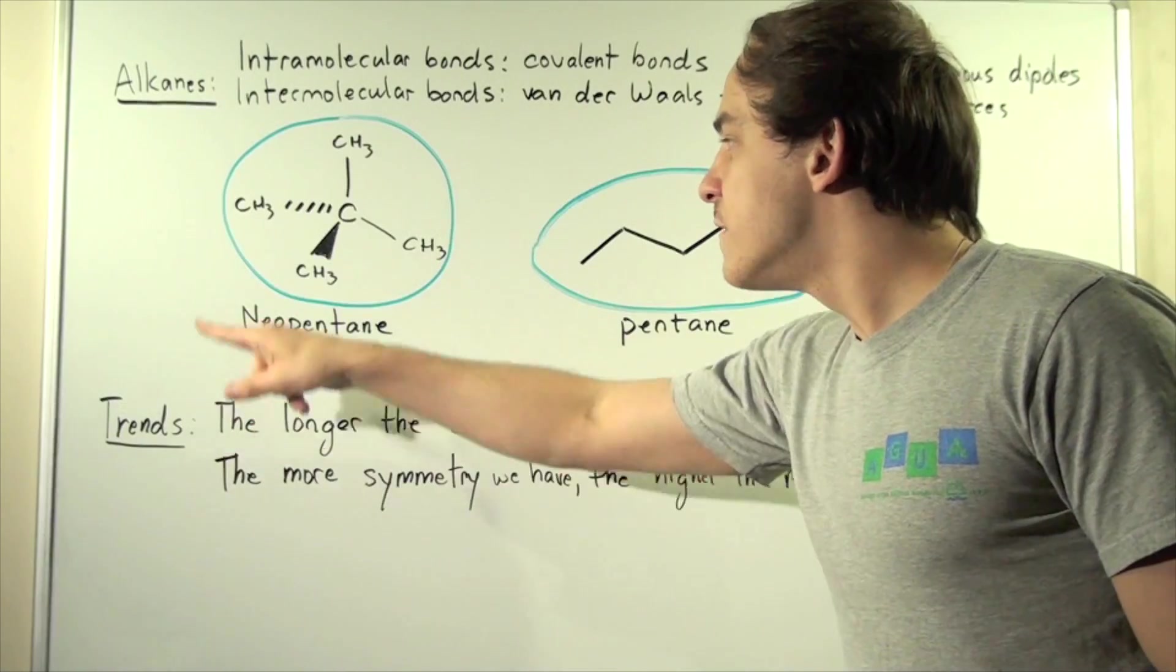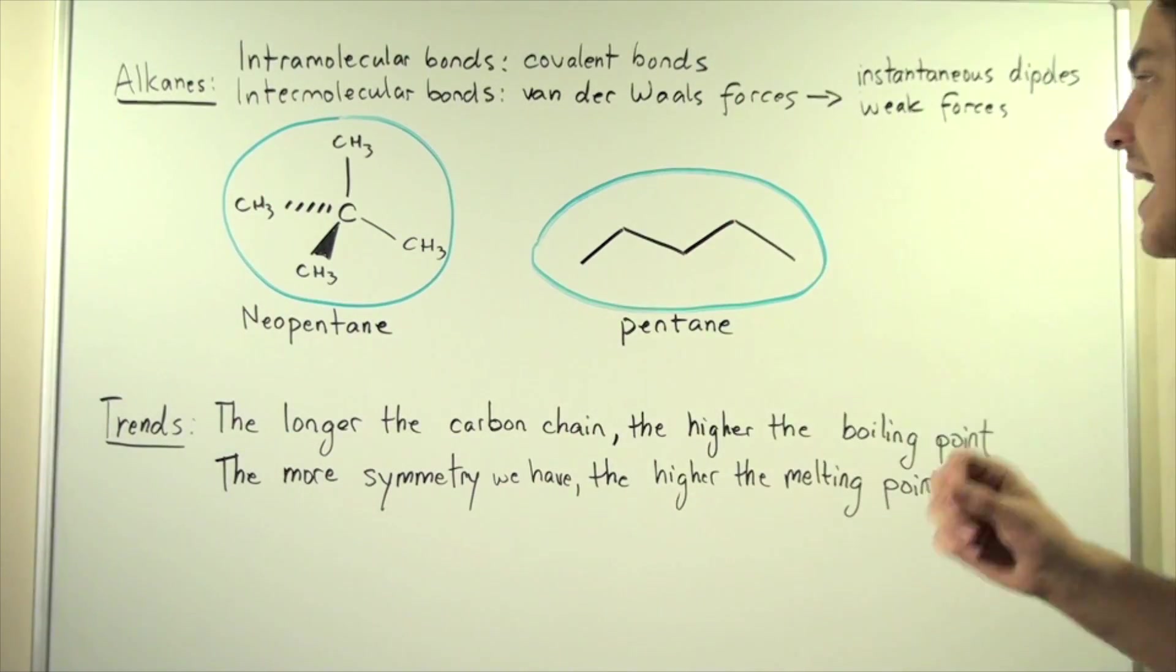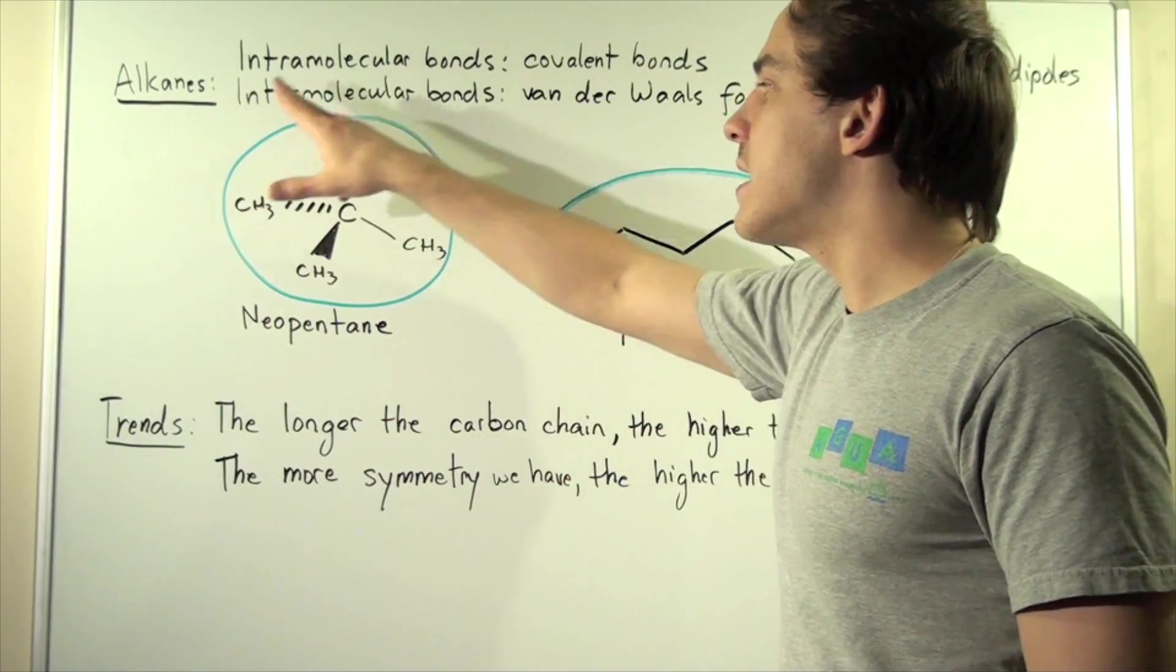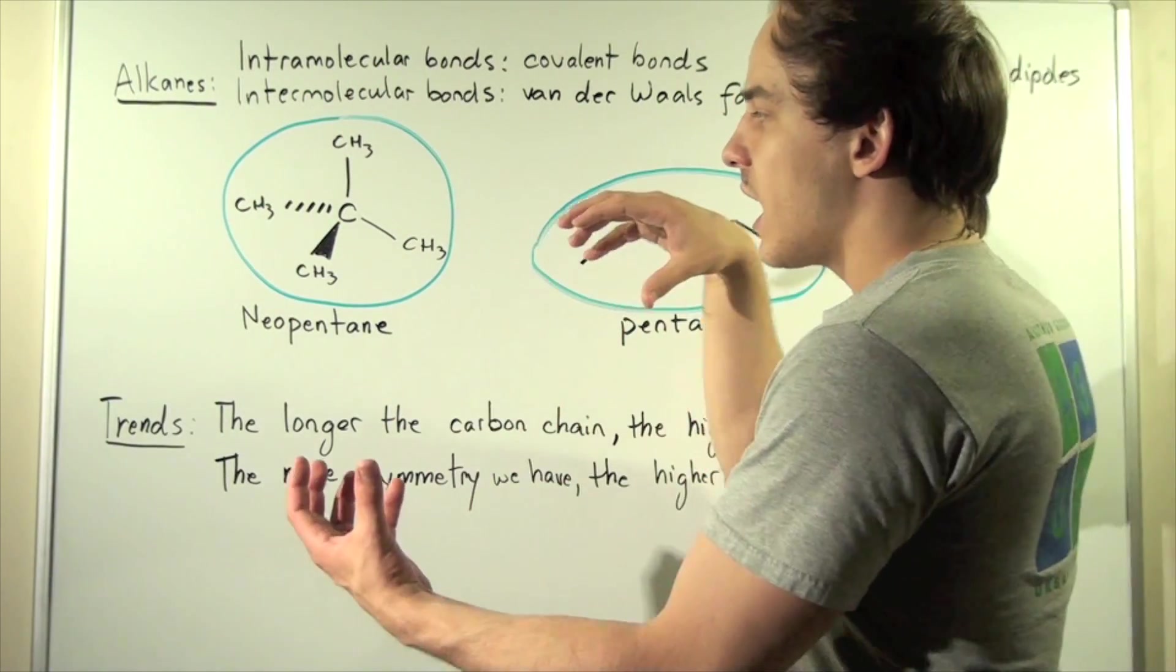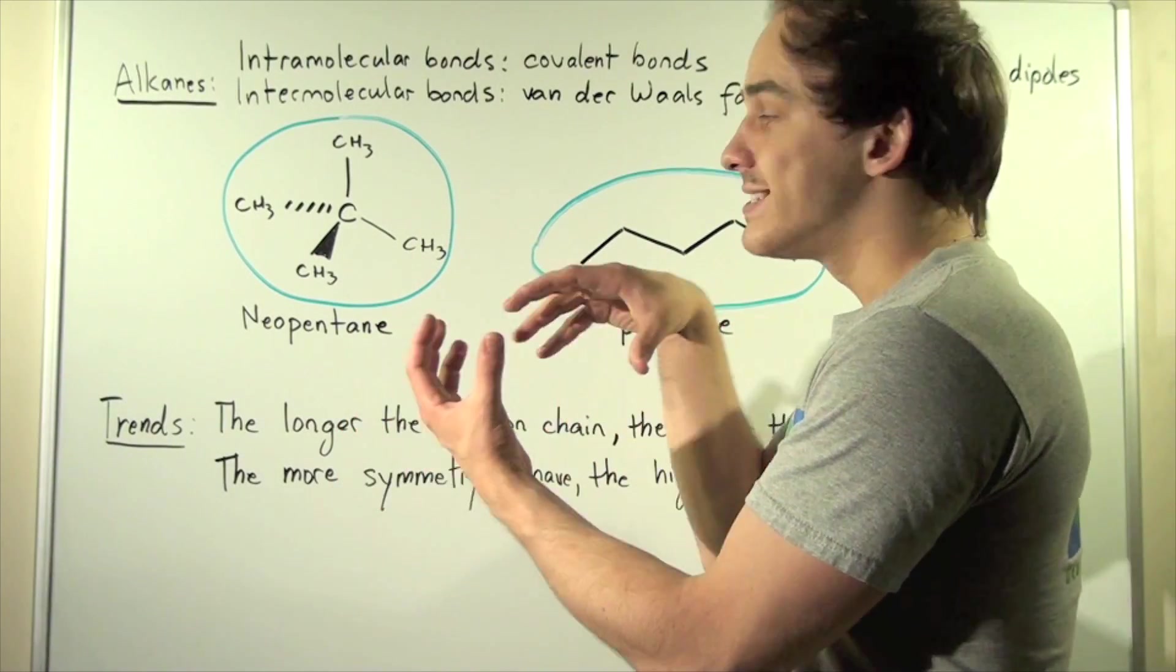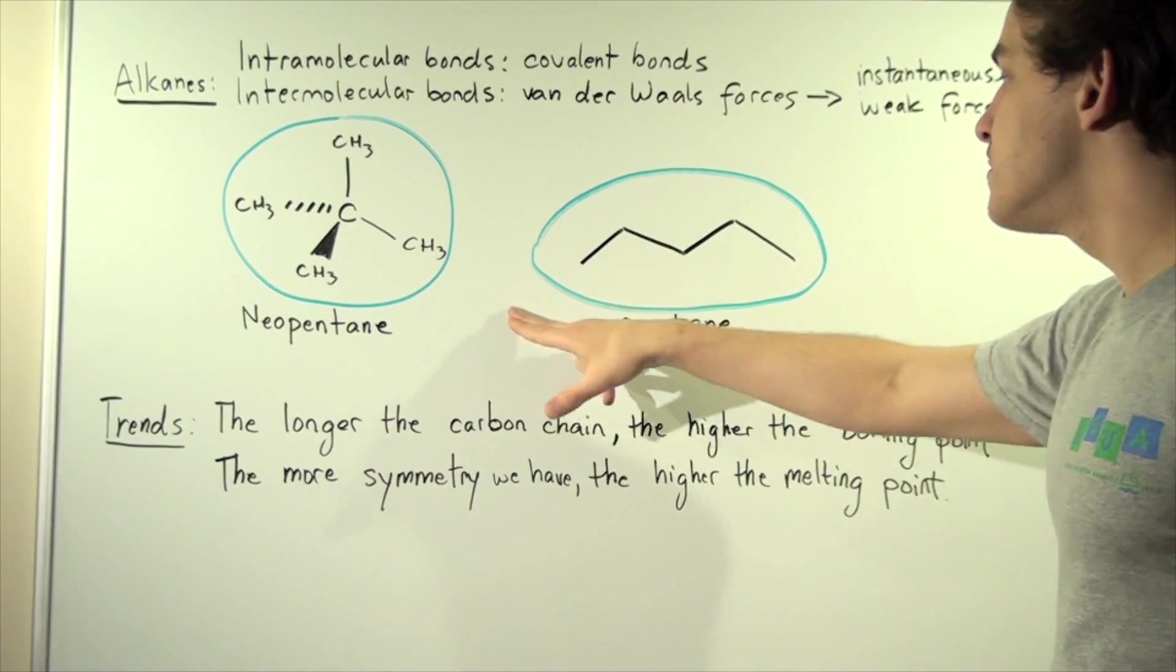And that's exactly why this neopentane will have a higher melting point because it's more symmetrical and it's able to compact itself into a solid state much better than this pentane.